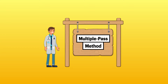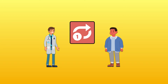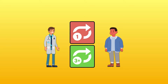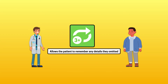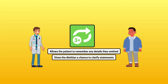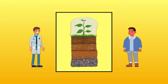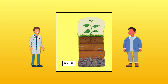The best way to obtain a 24-hour diet recall is to apply a multiple-pass method. Rather than walking the patient through their day one time, a multiple-pass method requires them to revisit what they eat and drink at least three times. Doing this allows the patient to remember any details they omitted on the first pass, and gives the dietician a chance to clarify statements they found to be vague or confusing. I like to think of this concept as a layering of information — on the first pass, the dietician just gets a small amount of it, and then with each subsequent pass, they go back for more until the entire picture emerges.